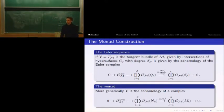Let me tell you what a monad construction is. We take a base space, a complete intersection manifold in a toric variety M, intersection of hypersurfaces Gj with multi-degrees Fj. The tangent bundle is given by the cohomology of the Euler complex written down here.